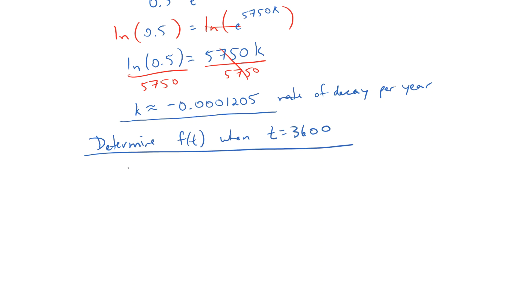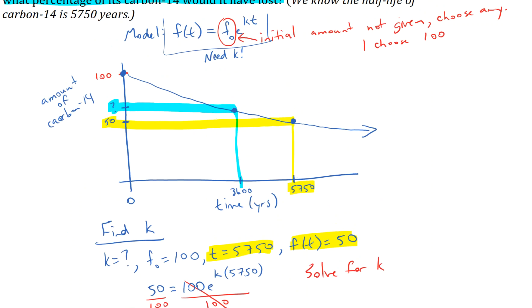So now our model looks like this. F(t) equals f sub 0, which is a fixed number, 100, times e to the k. We know our k value now. Negative 0.0001205 times t. So now I know that t is 3600 and I can plug that in. And that's going to give me f(t), which will be the amount of Carbon-14 that's currently in the mummy, 3600 years after it died.